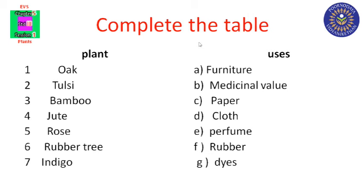Complete the table: plant uses. Oak — furniture. Tulsi — medicinal value. Bamboo — paper. Jute — cloth. Rose — perfume. Rubber tree — rubber. Indigo — dye. Write this also in the textbook.